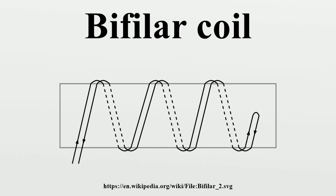For three strands, the term tri-filar coil is used. Some bifilar coils have adjacent windings arranged so that the current flows in opposite directions. The magnetic field created by one winding is therefore equal and opposite to that created by the other, resulting in a net magnetic field of zero. In electrical terms, this means that the self-inductance of the coil is zero.